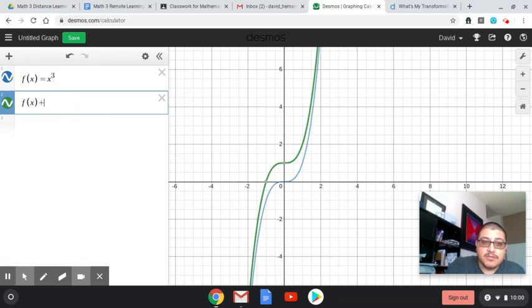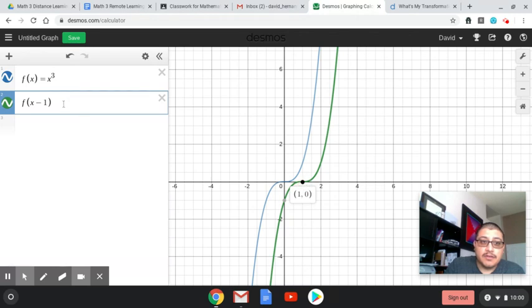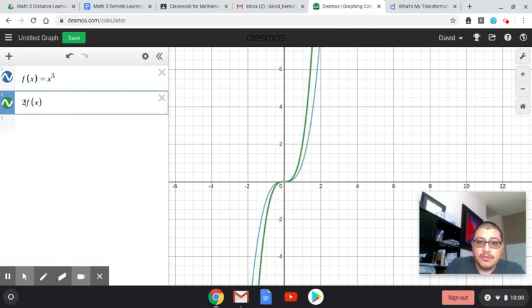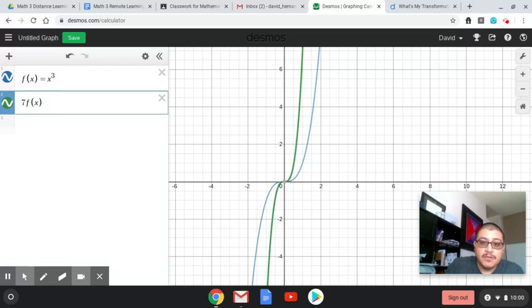If we put a number in front of it, it will make it more... let's see. Oh, it's green, so it made it more narrow. So those are the three types of movements that you can have when you're transforming these functions.